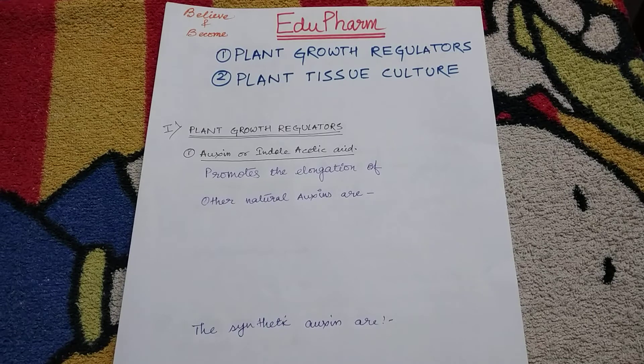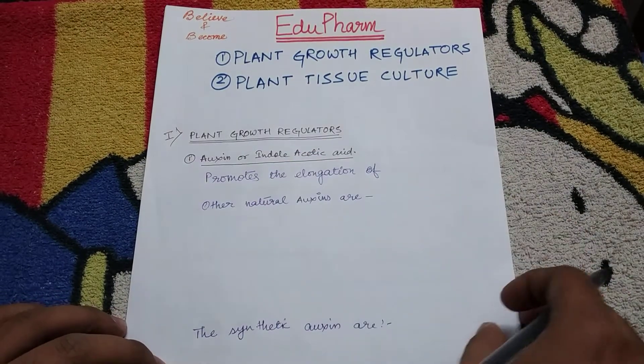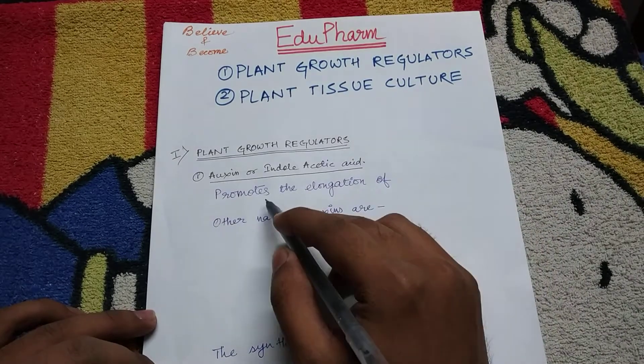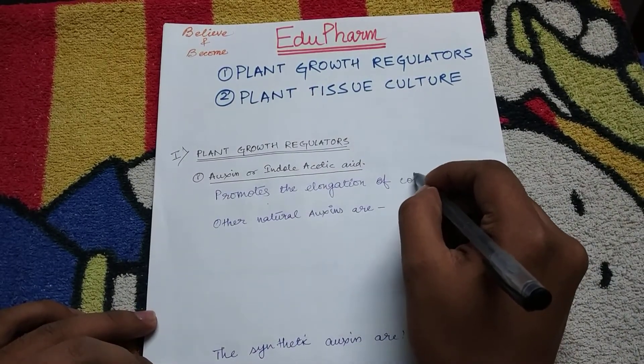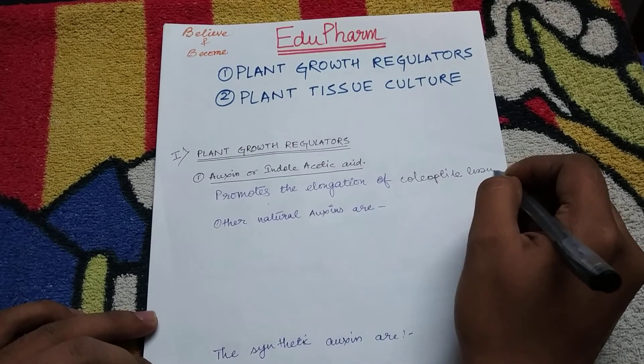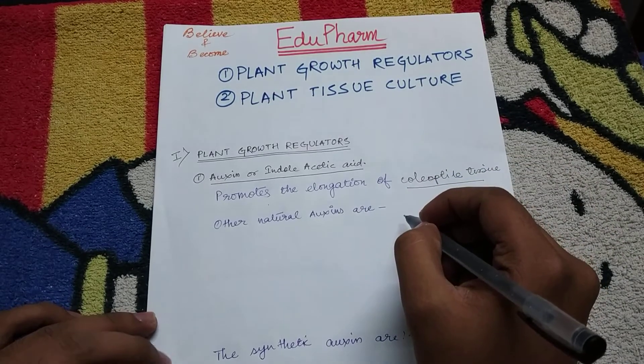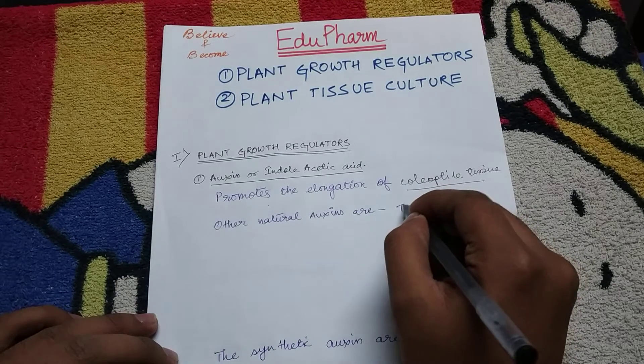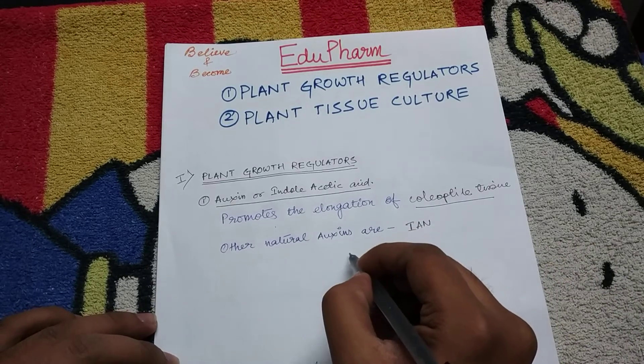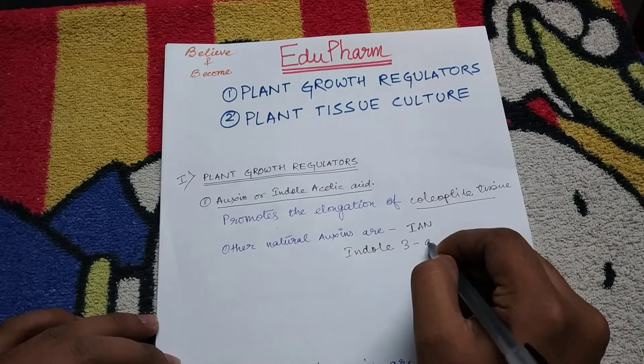Now the first topic, plant growth regulators. First growth regulator is auxin or indole acetic acid. Indole acetic acid or auxin promotes the elongation of the polyptide tissue. Now some other natural auxins other than IAA are IAN which is indole 3 acetonitrile.